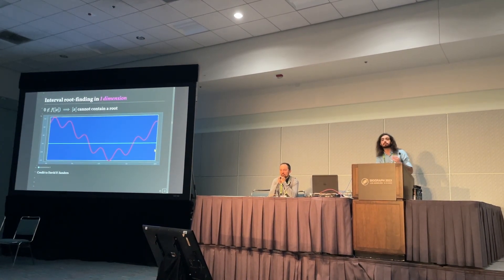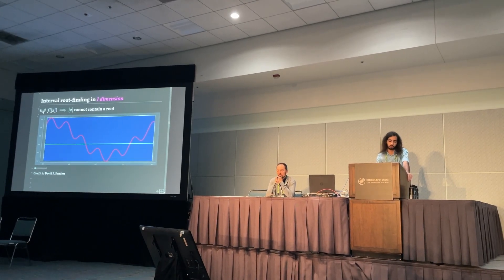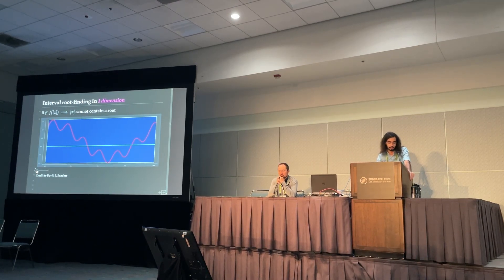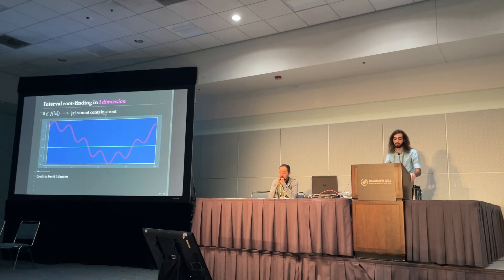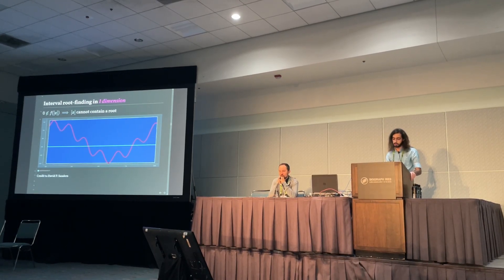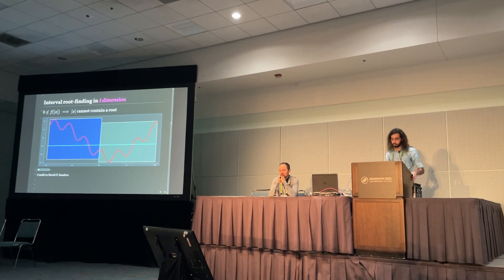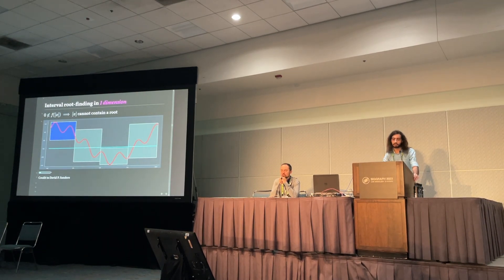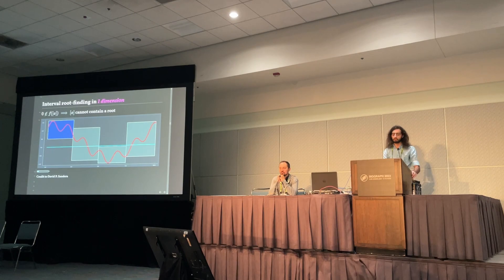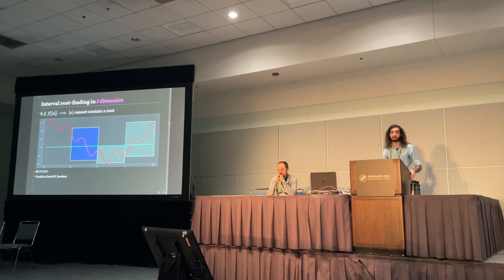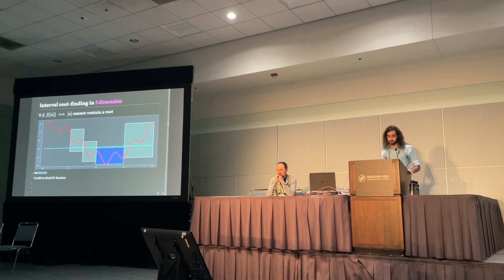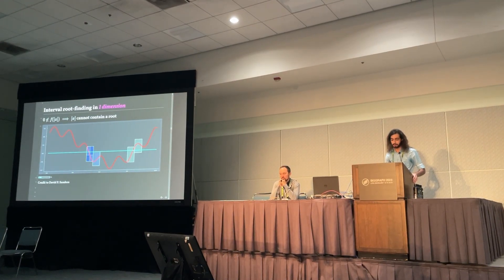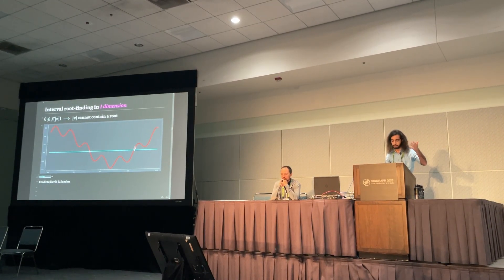Once we have interval arithmetic, it's very easy to do root-finding. We just apply this rule where if zero is not contained in the image of some interval, then the interval cannot contain a root. So we can run this example in one dimension where we're trying to root-find this red function — basically find these two points. We subdivide the input domain, reevaluate with interval arithmetic, and proceed until we find an interval where the image does not intersect this blue line. We've essentially proven that this region cannot contain a root, so we delete it and move on. We subdivide, subdivide, subdivide, and very quickly we converge to the roots.